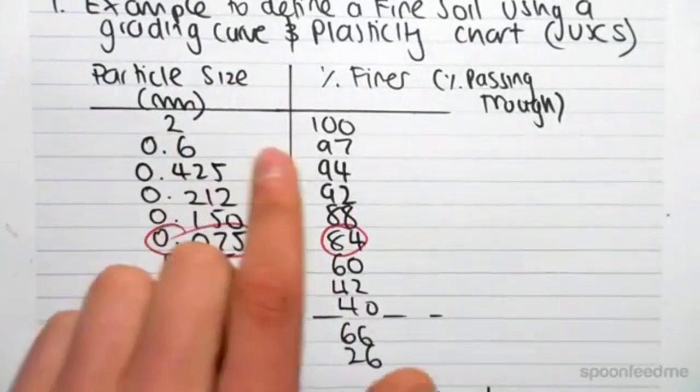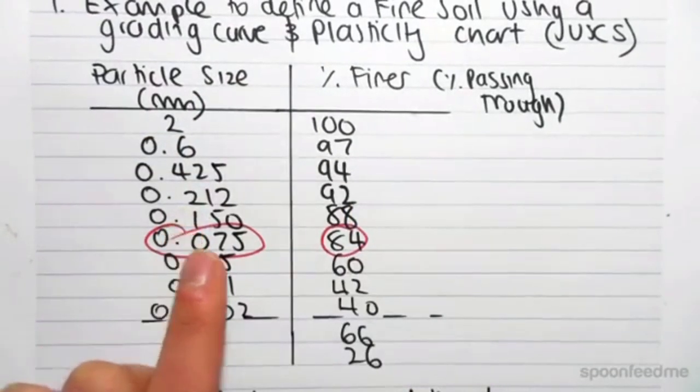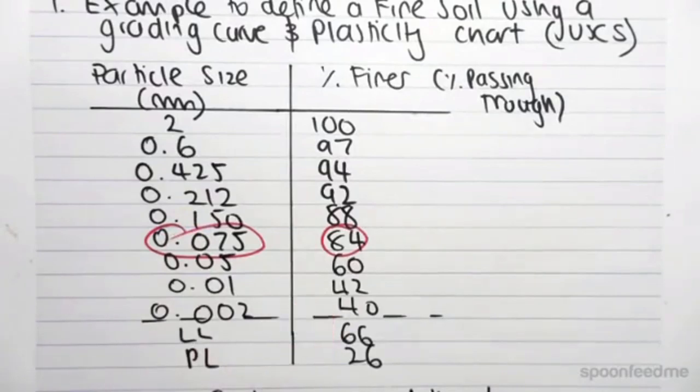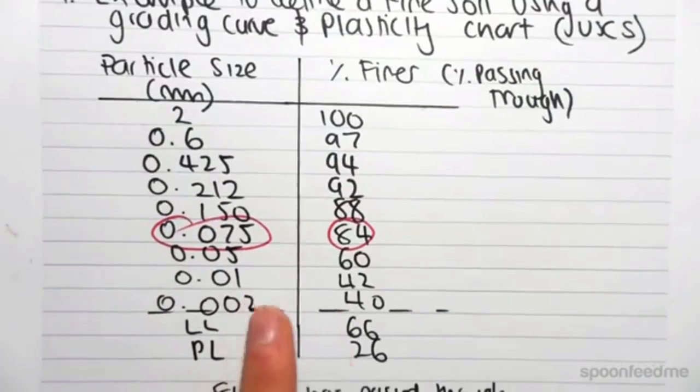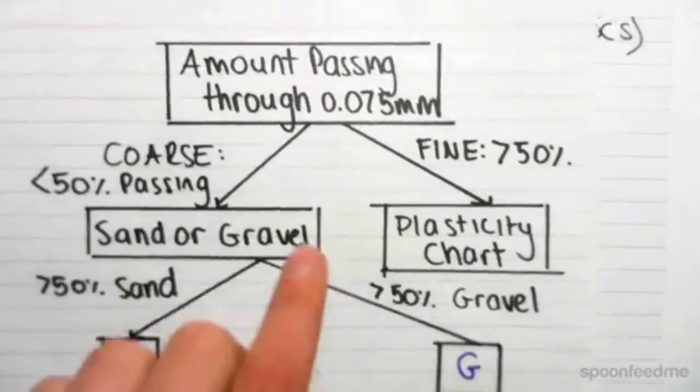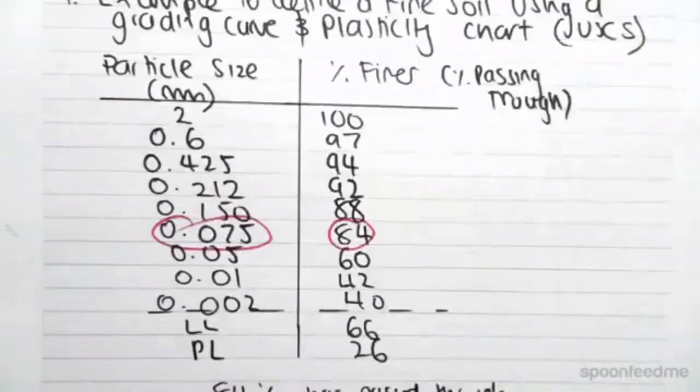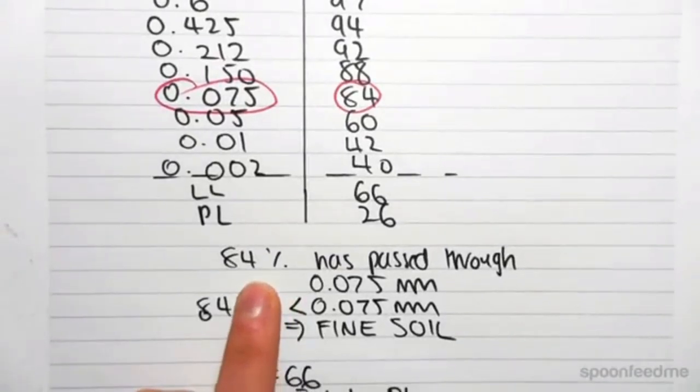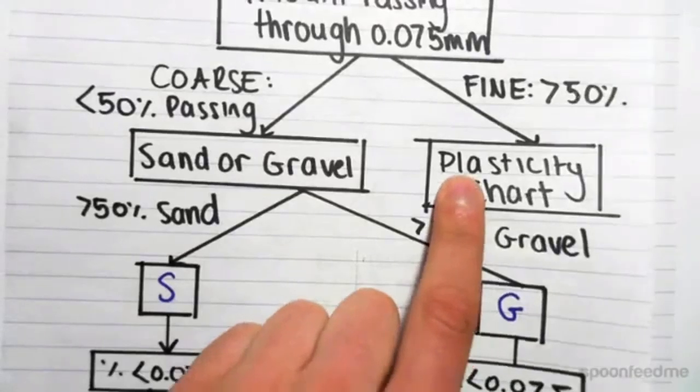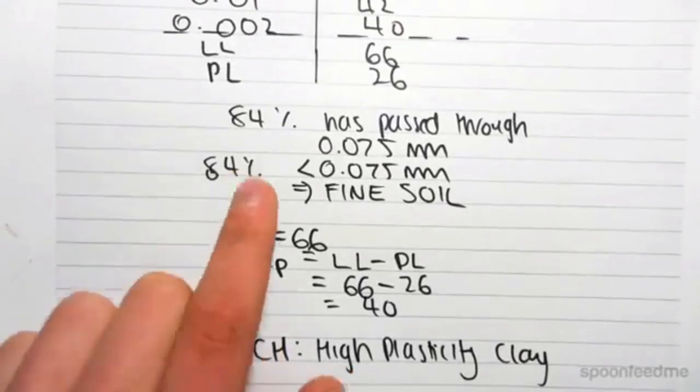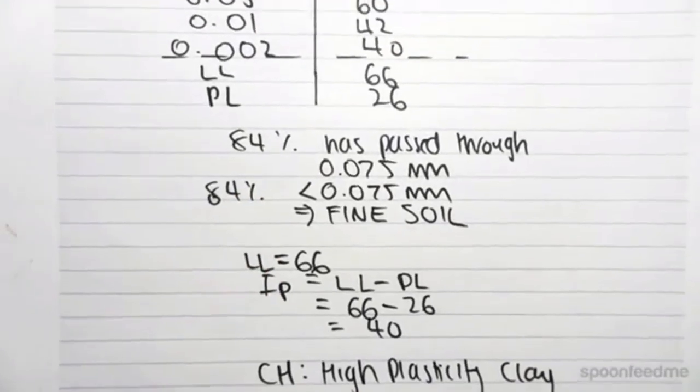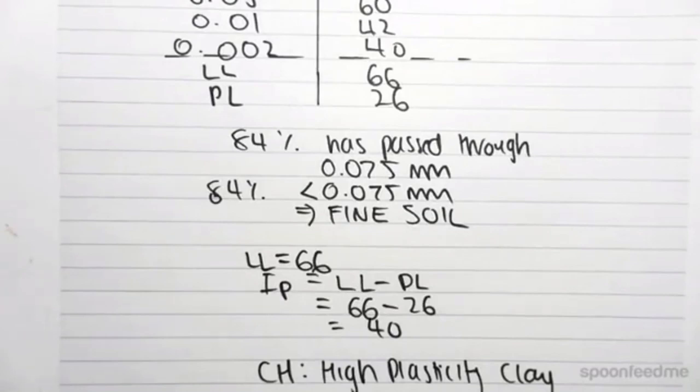So just a quick summary, we were given the table, which allowed us to do a soil grading curve, which wasn't that necessary for this example, but I just did it. The first thing on our flowchart was the amount passing through 0.075, which if it was a majority, which it was with 84% passing through, that means we had to use the plasticity chart, and we needed this liquid limit and the plasticity index, and that allowed us to determine the name of our fine soil.